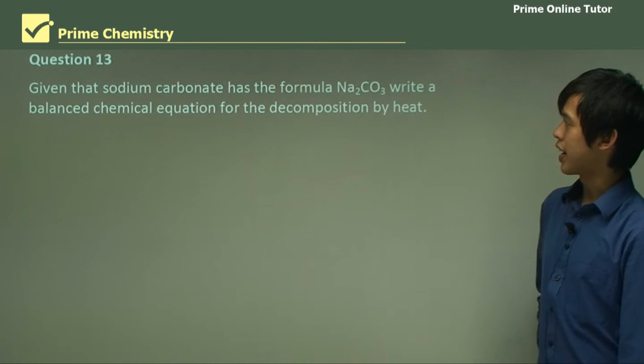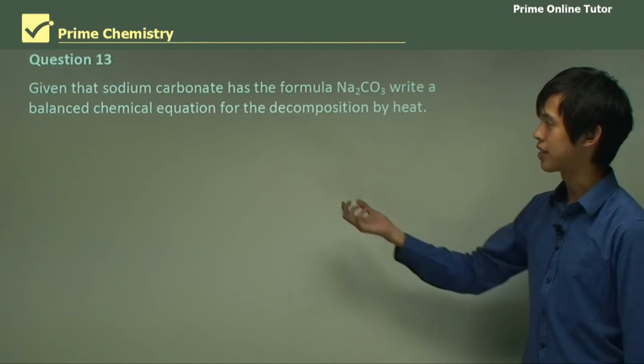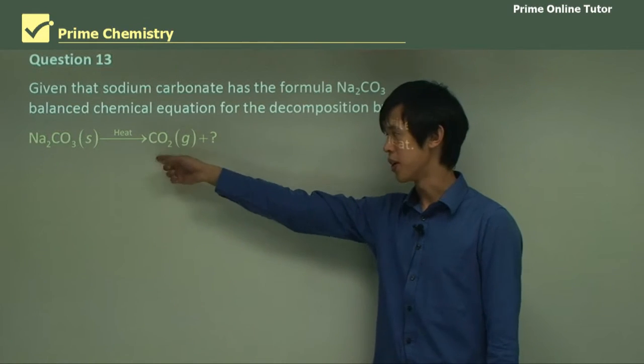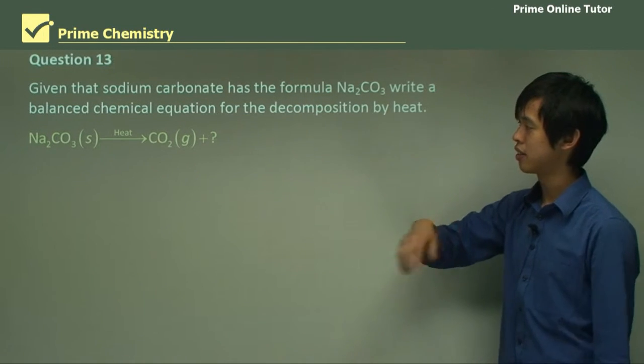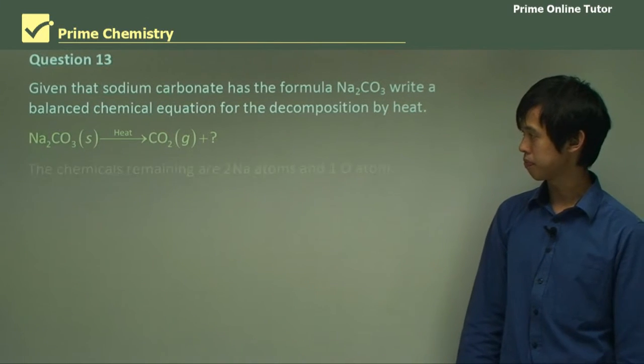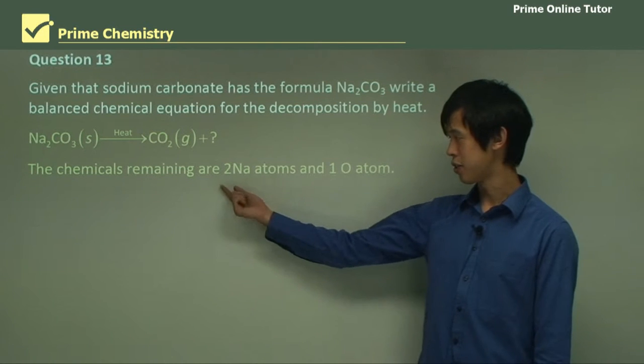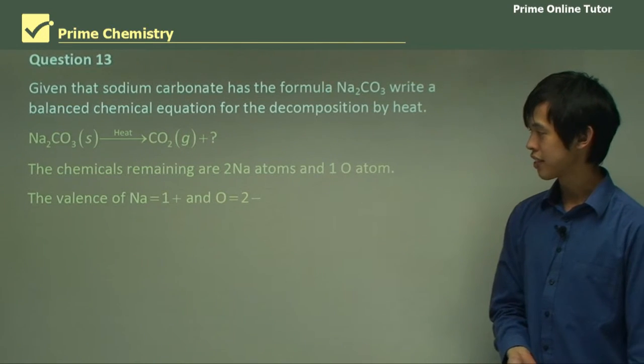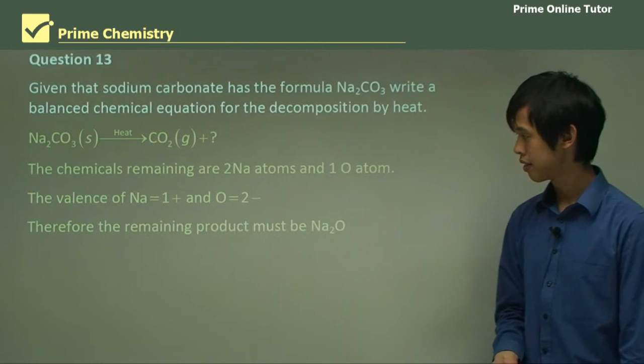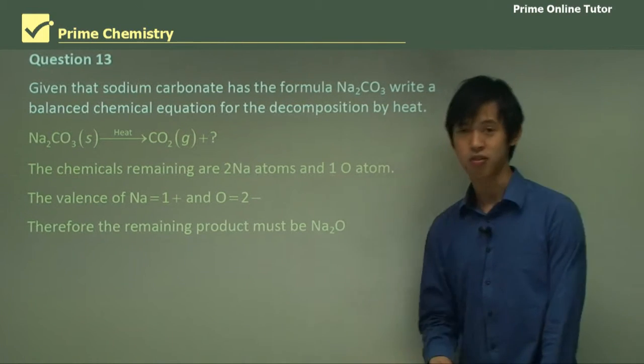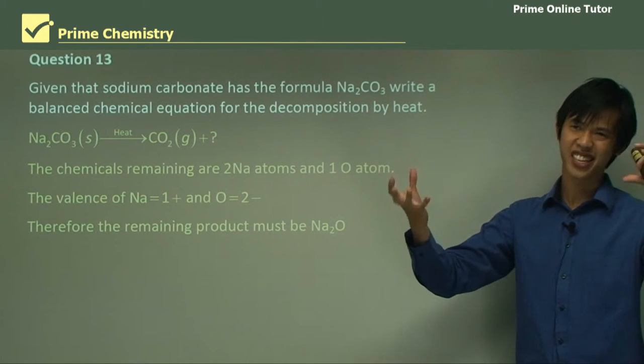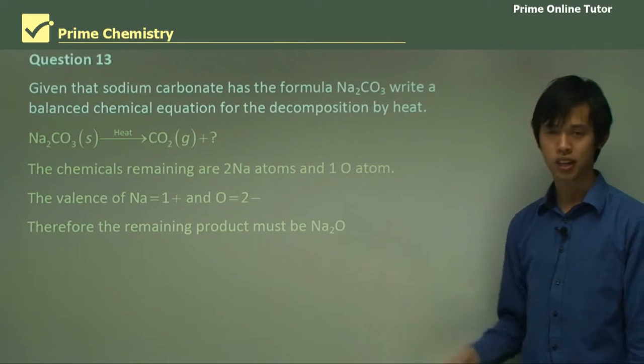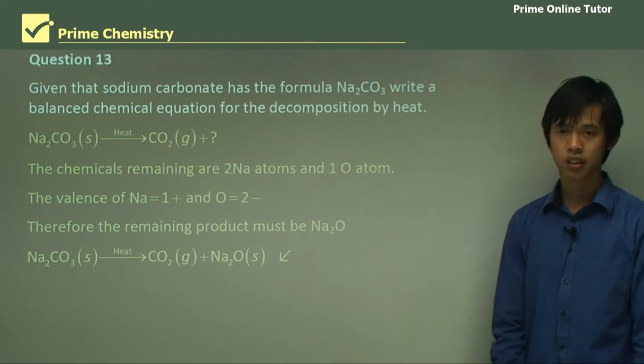Question 13. Given that sodium carbonate has the formula Na2CO3, write a balanced chemical equation for the decomposition by heat. So the same thing, we start with what we know. We know we get CO2 out because we just talked about it in the previous question. Now all we need to know is what this question mark is. So the chemicals remaining are 2 Na atoms and 1 O atom. The valence of Na is 1+, and the valence of O is 2-, and therefore the remaining product must be Na2O. Now that makes sense again, because if it's already bonded together, it's likely to stay that way if just one carbon dioxide has been removed. So that's probably a good place. And then you just write it out.